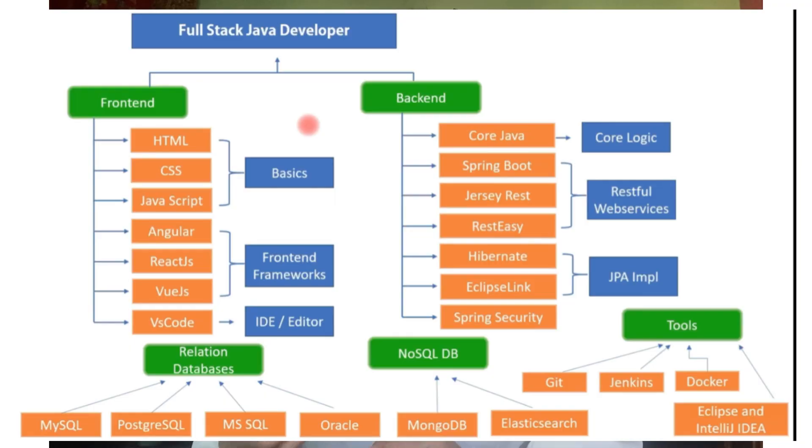For the backend, you should know Core Java. In Core Java, your basics should be strong — OOP concepts, inheritance, collections — you should know where and how to use each one. If your Core Java is strong, everything ahead becomes much simpler. So if you are in backend, make your Core Java very strong first.